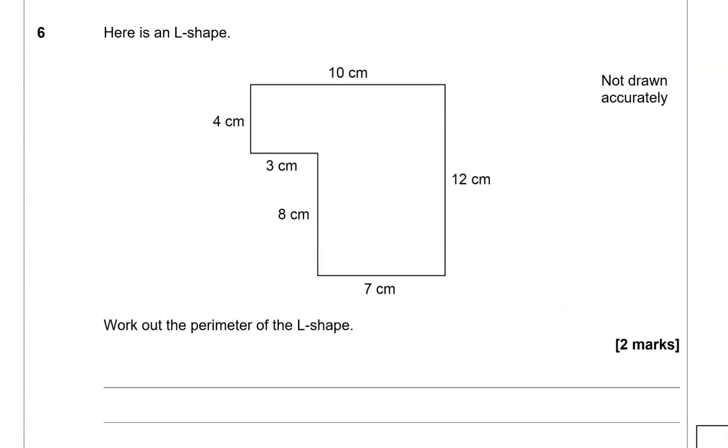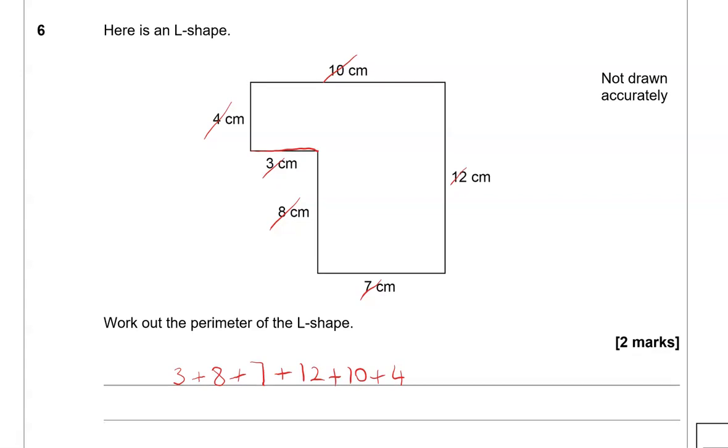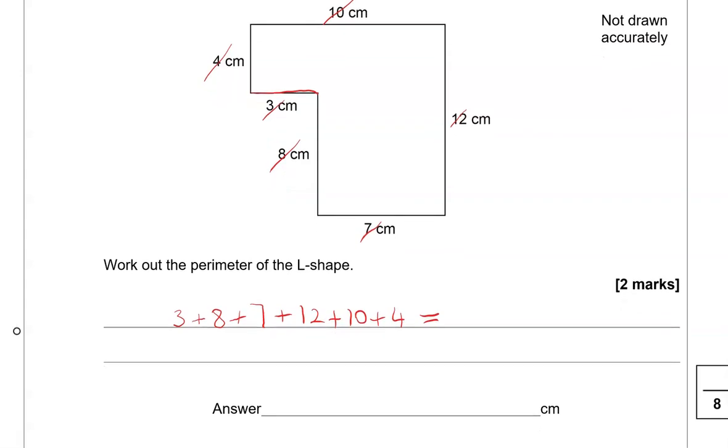Here is an L shape. Work out the perimeter of the L shape. So perimeter is the rim going around. So I'm going to start adding. So we've got 3 cm, we're going to add 8, we're going to add 7, we're going to add 12, we're going to add 10, and finally 4. So we need to work out the total. But as we can't use a calculator, I'm going to pair the numbers up so it's easier to calculate them. So I'm going to pair up the 3 with a 7, which makes 10, 8 and the 12, which makes 20. Then we've got 10 and then 4.